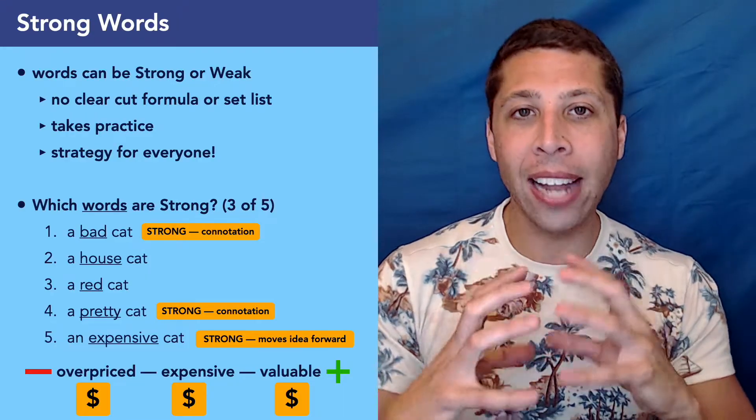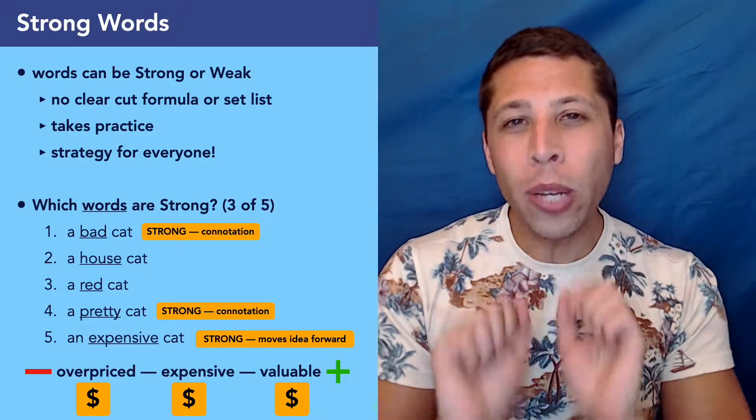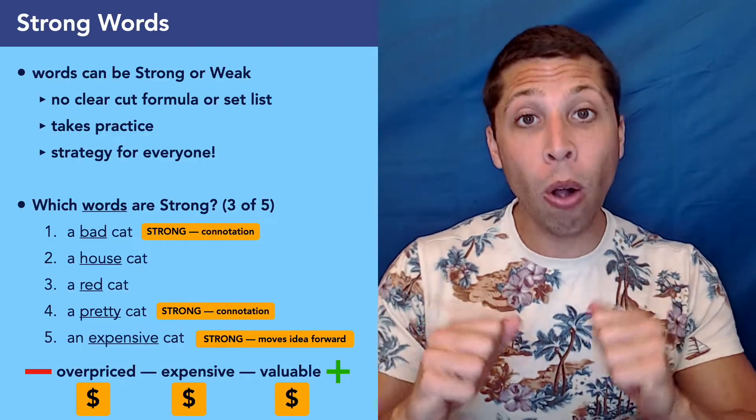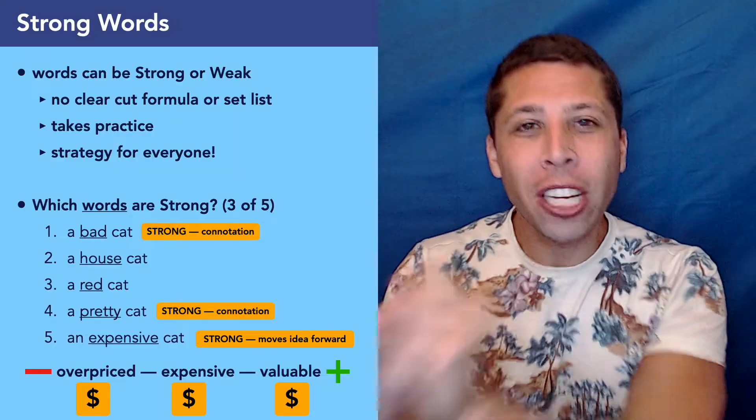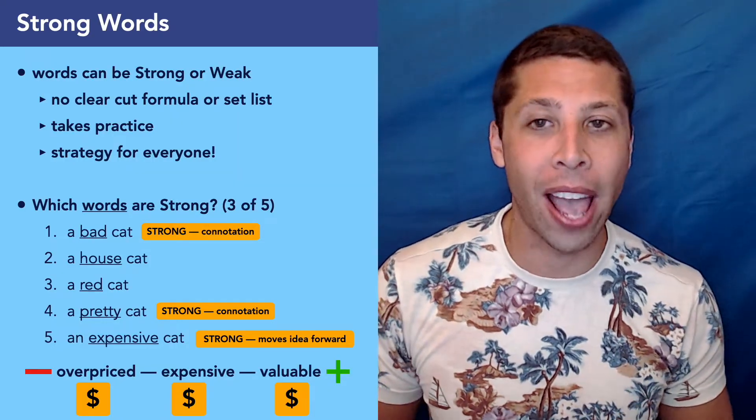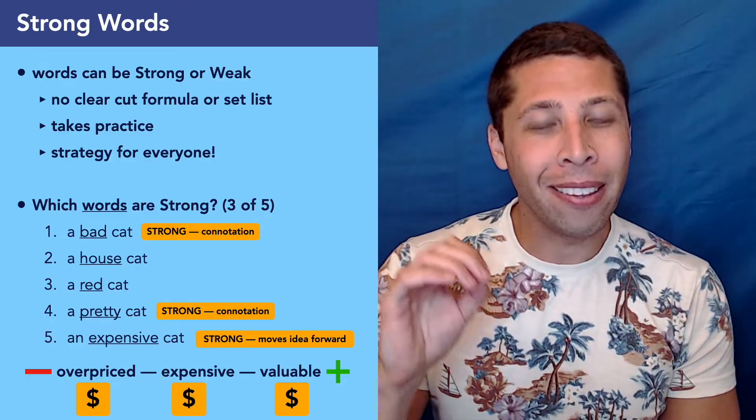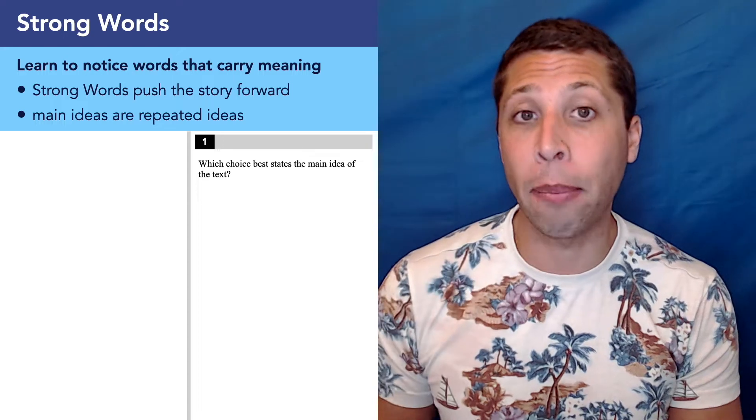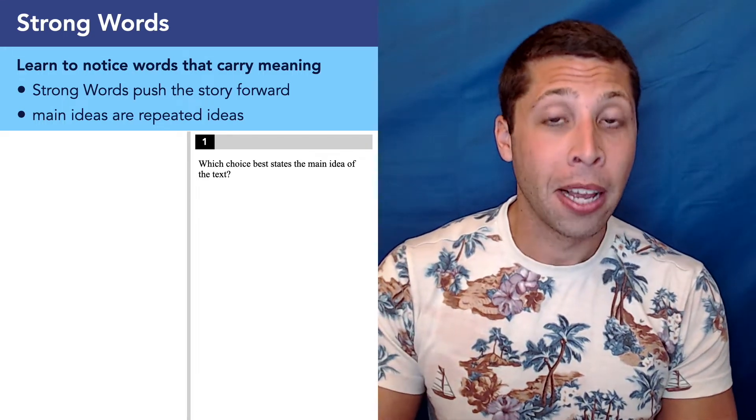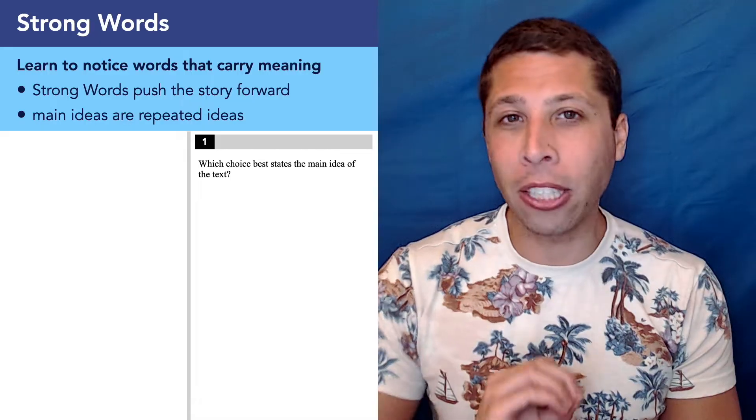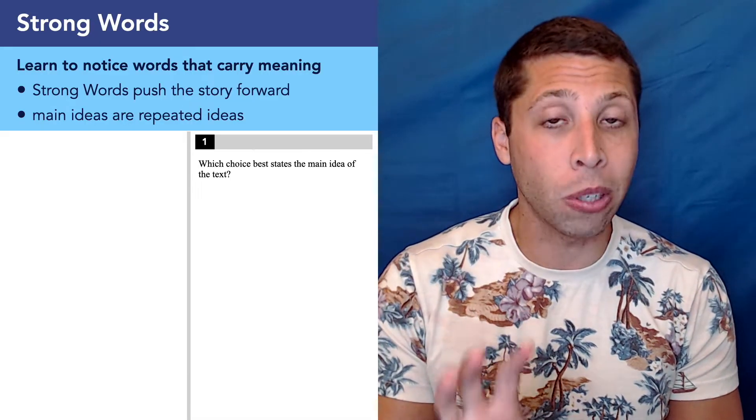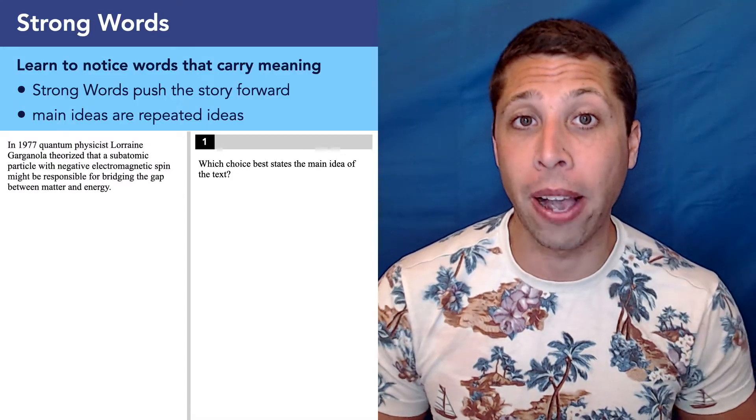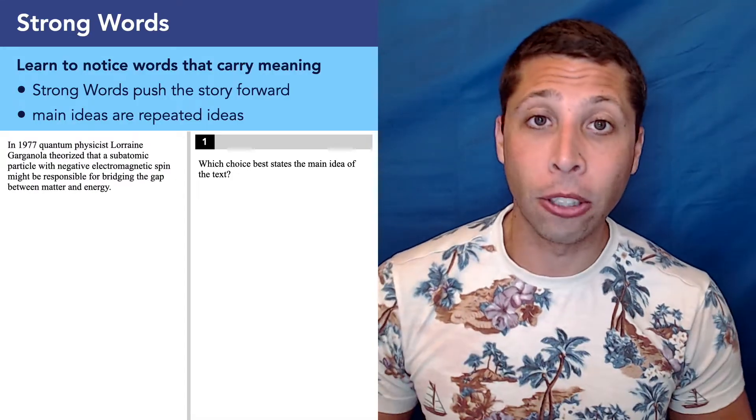So expensive doesn't necessarily have a set connotation, but no matter what the word is here, I know it has to do with money. So here's a case where a word is strong, not necessarily because of positives and negatives, but because it brings something else to the table. Your opinion of this cat is like a big boulder, and weak words are trying to push that and they're not really moving it in any particular direction. But strong words, they have the power to change your opinion. It's hard to define, but we need to start thinking of strong words as going beyond connotation.